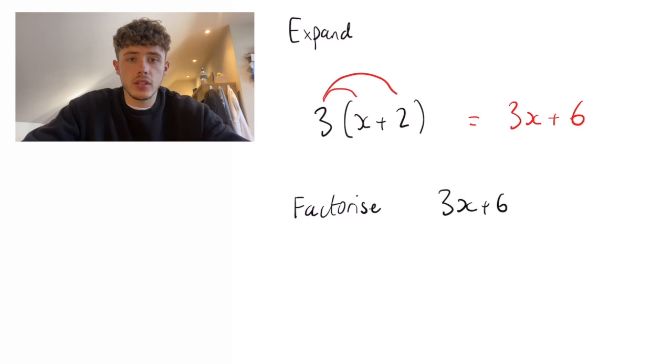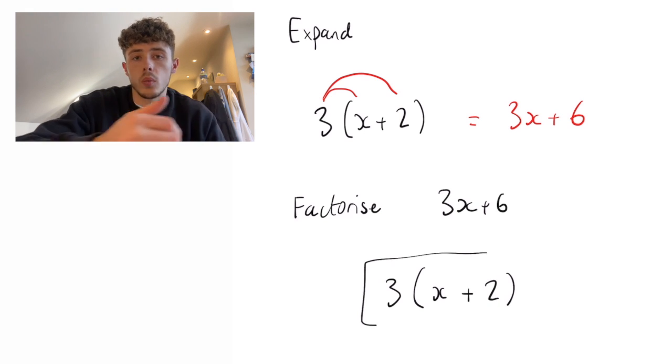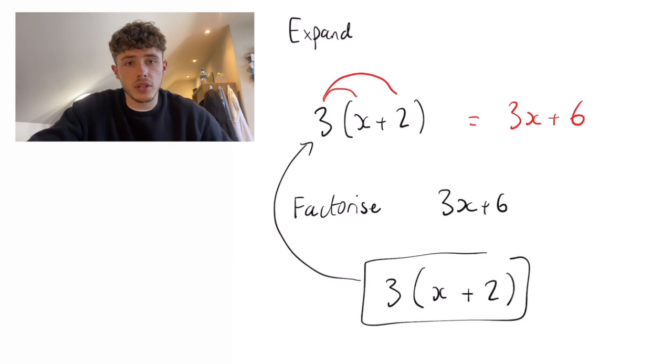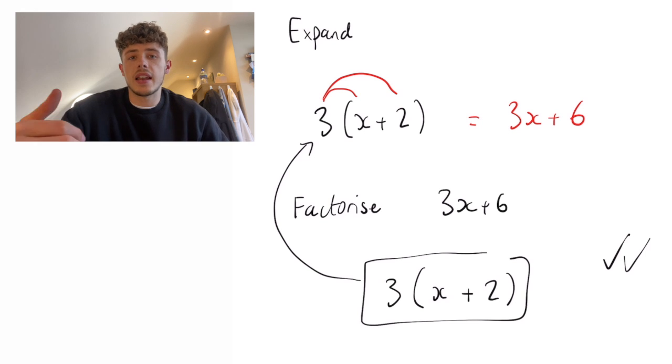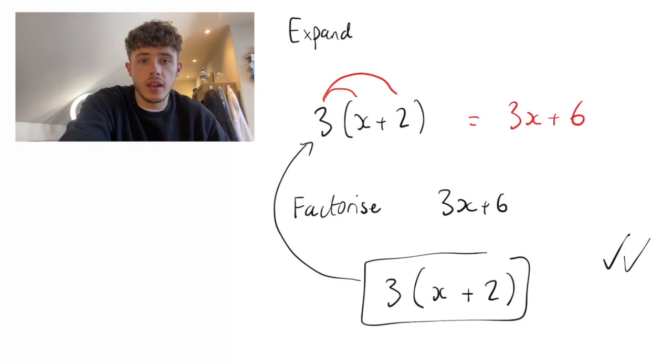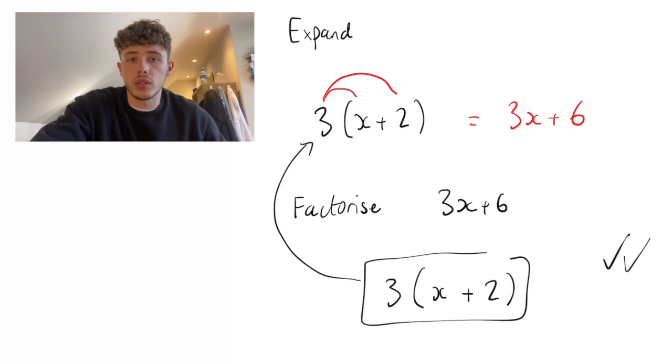If we try and factorise that expression back into brackets we should get exactly what we started with. So 3x plus 6, we can take a 3 out of the bracket, and have x plus 2 inside, which is back to the starting question that we had. So if you do that in an exam you can walk out knowing 100% that you got those 1 or 2 marks.